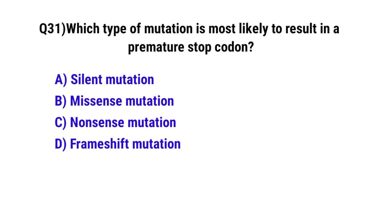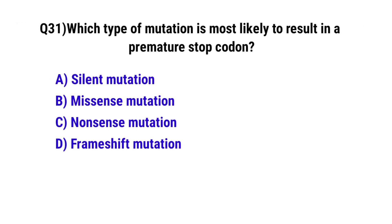Question number 31. Which type of mutation is most likely to result in a premature stop codon? The correct option is C. Nonsense mutation.